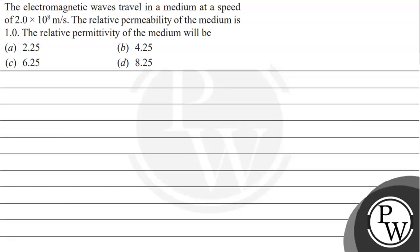Hello, let's take a given question. The question says the electromagnetic wave travels in a medium at a speed of 2 × 10⁸ meter per second. The relative permeability of the medium is 1. The relative permittivity of the medium will be: option A: 2.25, option B: 4.25, option C: 6.25, option D: 8.25.